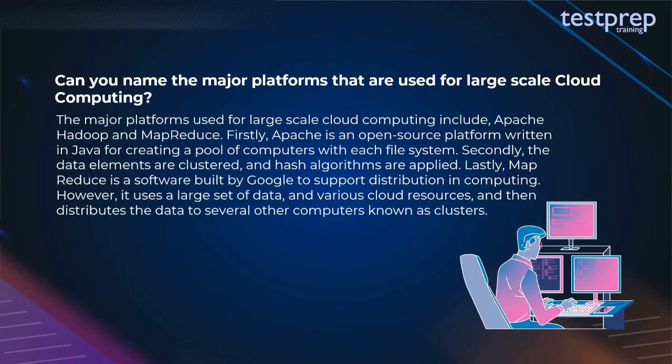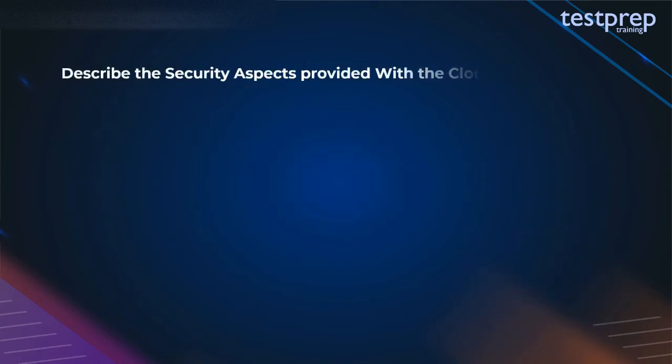Apache is an open source platform written in Java for creating a pool of computers with each file system. The data elements are clustered and hash algorithms are applied. MapReduce is software built by Google to support distribution and computing; it uses a large set of data and various cloud resources and distributes the data to several computers known as clusters.